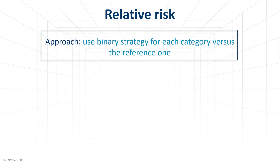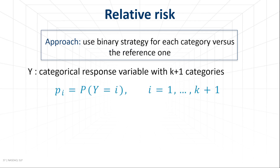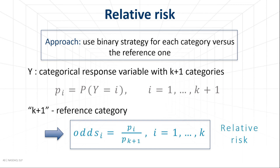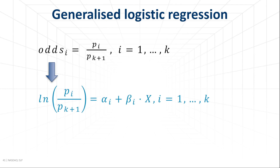In this case, a common approach is to apply the binary strategy where we compare each category versus a reference one. Suppose there are k+1 categories, and we want to model the probability that the response variable y equals one of these categories. Let the category k+1 be the reference category. The odds ratio can be defined for each category up to k with respect to this reference category — often known as the relative risk. We calculate the logarithm of the odds and assume a linear relationship between it and the explanatory variable. This is an example of a generalized logistic regression, and it has the advantage of ensuring that the probabilities of all categories sum to 1.